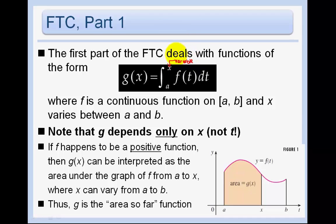x is a variable somewhere between a and b. Note that g depends only on x, not on t. We're taking the integral of f of t dt where the function depends on t, but we're letting g of x be an accumulator function — the integral from a to x.